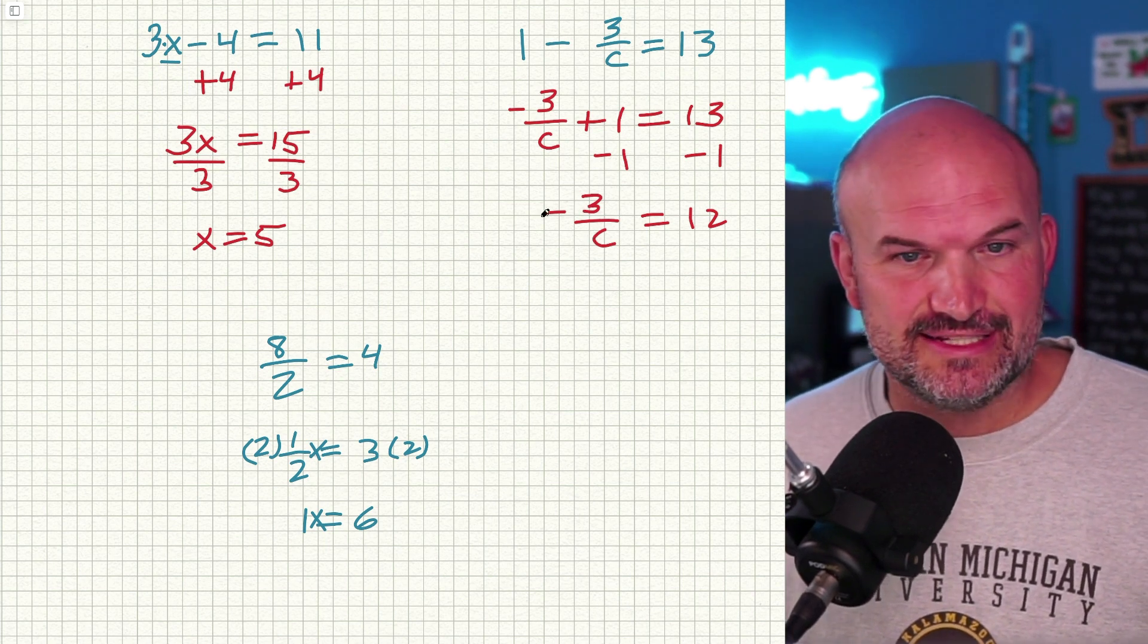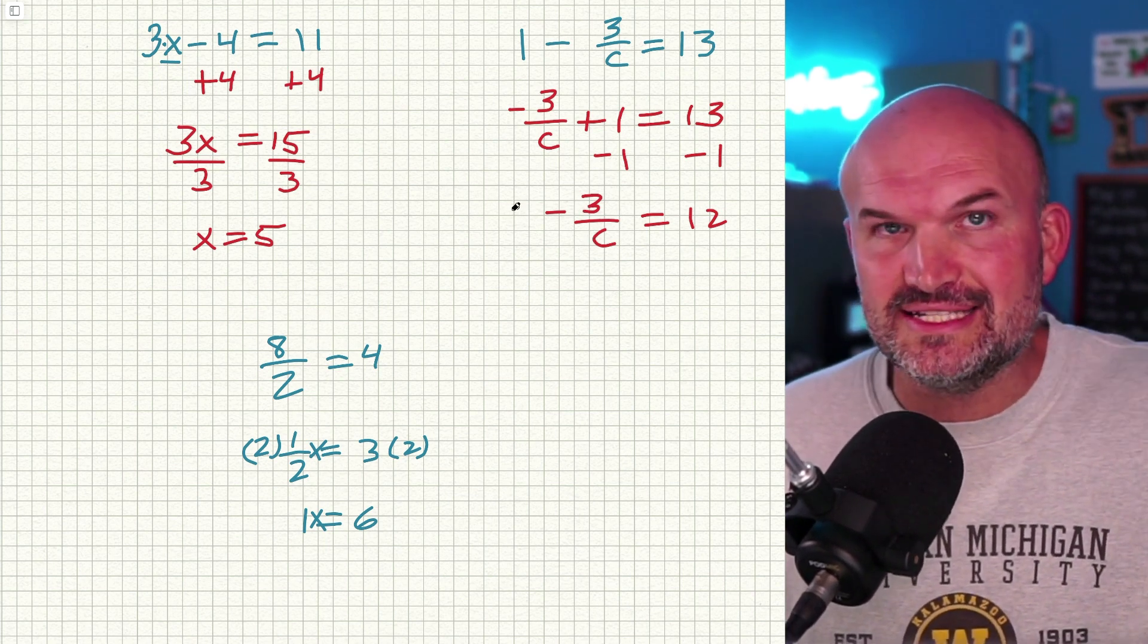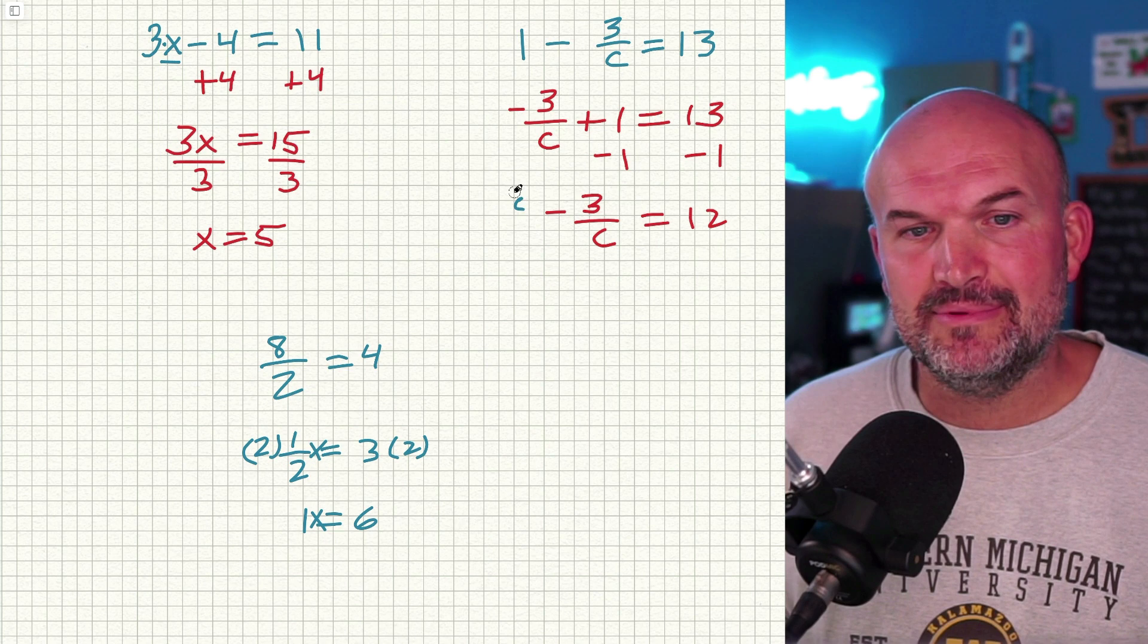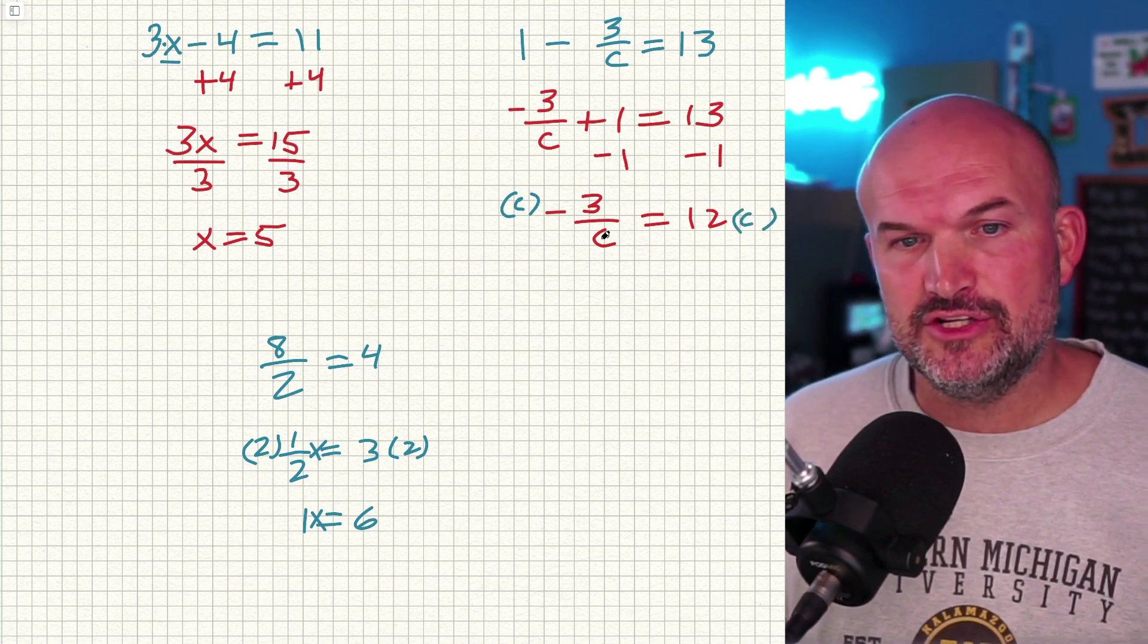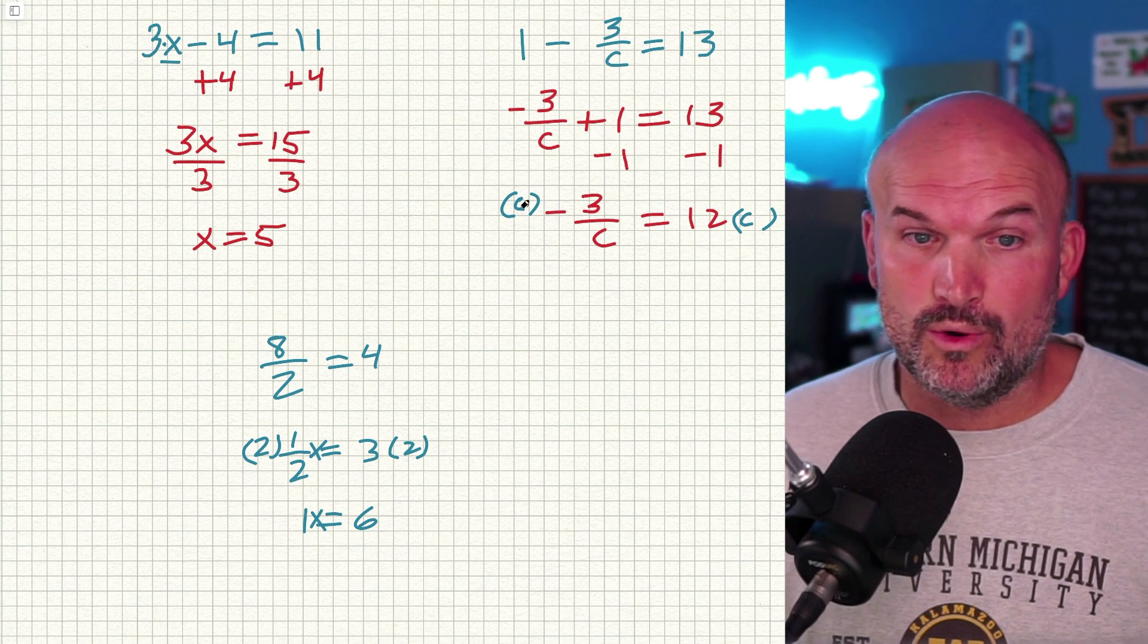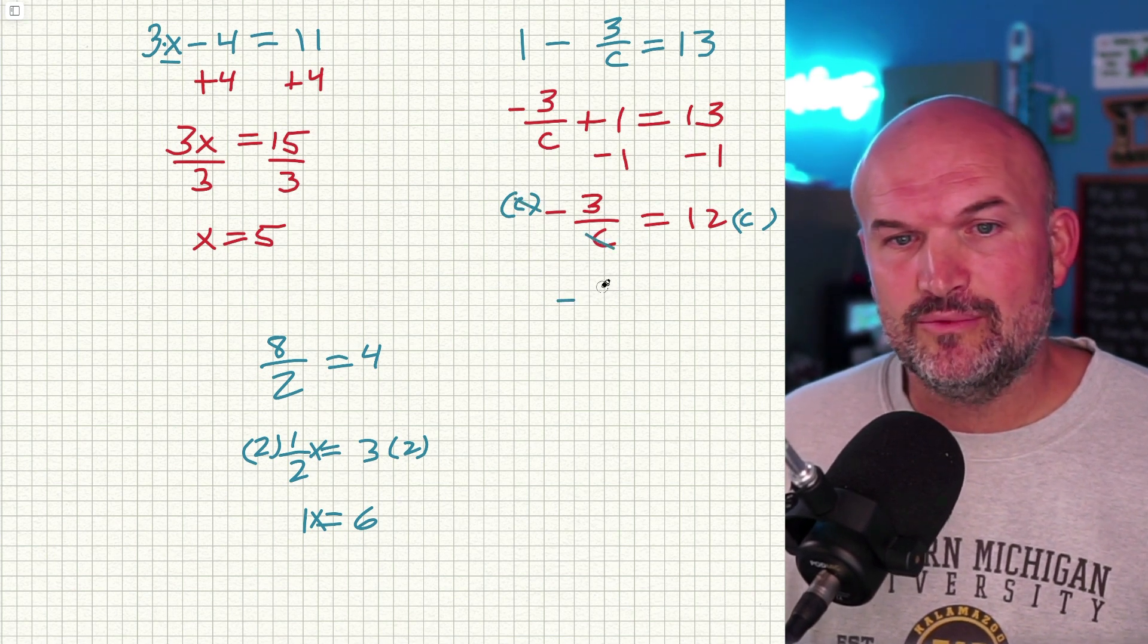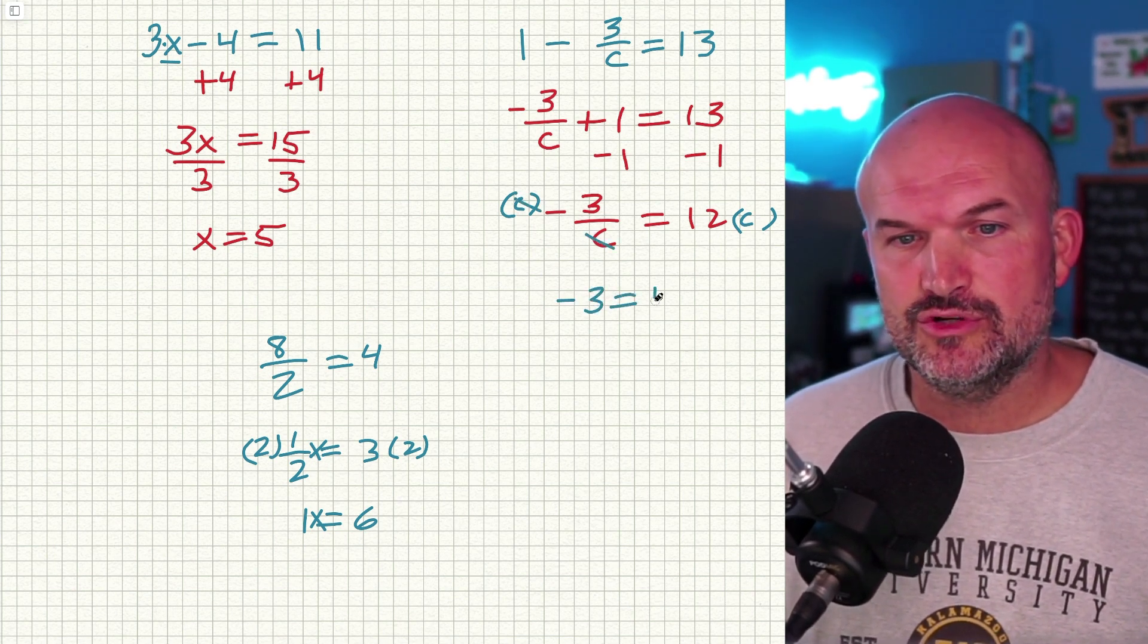Now, in this case, we have C in the denominator, but the idea of the process is exactly the same. I'm going to multiply by C on both sides. What that is now going to allow me to do is my C divides into C one time. So that's going to leave me with -3 = 12C.